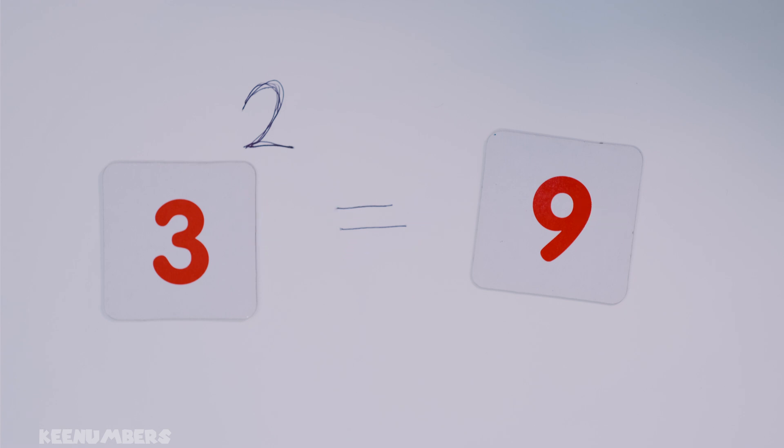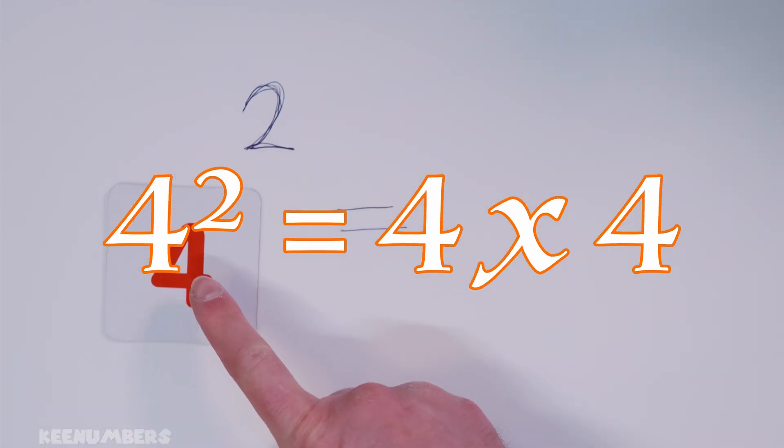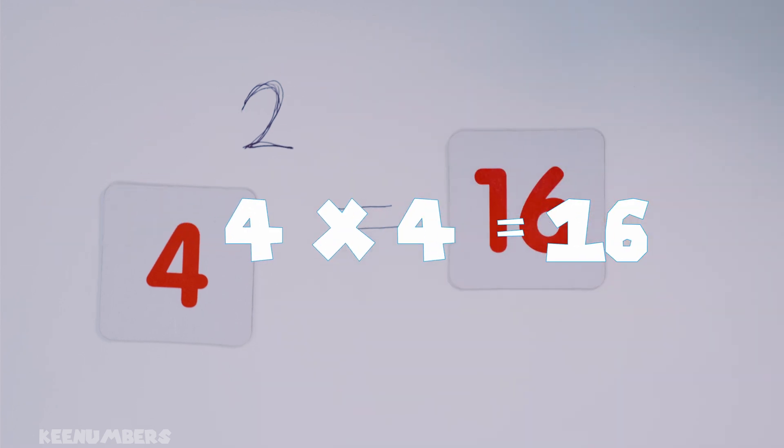Too easy. Let's try something harder. What about four squared? That just means four times four. You know what four times four is. 16. Four squared is 16.